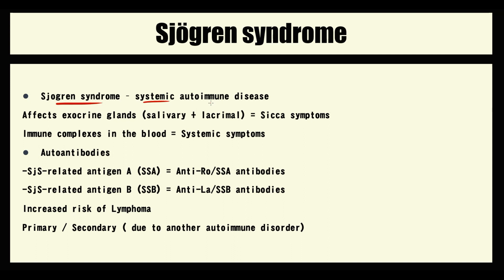Sjögren's syndrome is a systemic autoimmune disease. The major targets in Sjögren's syndrome are exocrine glands, such as salivary glands and lacrimal glands. If they do not work, sicca symptoms develop. But also Sjögren's syndrome causes formation of autoimmune complexes, which are responsible for systemic symptoms.